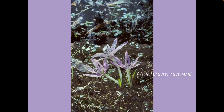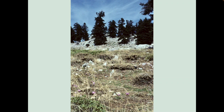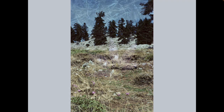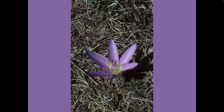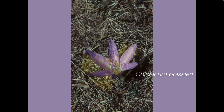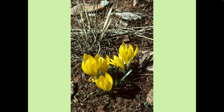Moving a bit higher up Parnassos, to about 1800 metres above sea level, we can find Colchicum boissiri. This has a more limited distribution, restricted to Greece and Turkey. There are more geophytes to be seen, but this has introduced three of the main autumn-flowering genera. So remember: if it has three stamens it's a crocus; if it has six it's a colchicum — unless of course it's a Sternbergia.